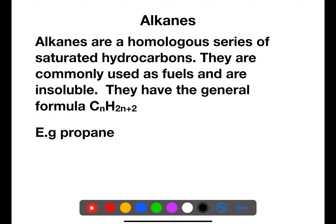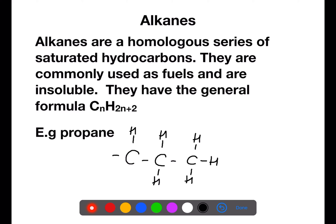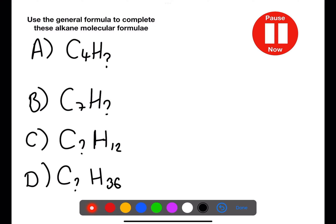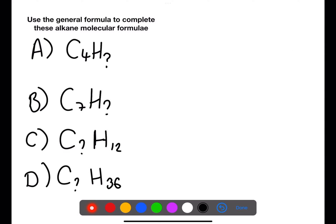The first family we're looking at are the alkanes. They're a homologous series of saturated hydrocarbons. They're commonly used as fuels and are insoluble in water. They have a general formula CnH2n+2. This means that for every carbon there are two plus two hydrogens. We can see this with propane, which has the molecular formula C3H8. Pause the video now and use the general formula to complete these alkane molecular formulae.